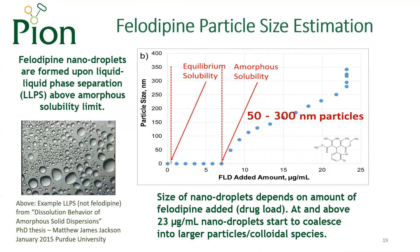This slide shows the evolution of particle sizes with each successive aliquot addition of felodipine stock solution. The drug completely dissolves even above the crystalline solubility, until the amorphous solubility is reached and drug-rich droplets are formed by liquid-liquid phase separation. An example of a typical picture illustrating liquid-liquid phase separation is shown in the photograph, although it is not felodipine in the picture. The size of the felodipine drug-rich nano droplets increases from approximately 50 nanometers to 300 nanometers with each successive aliquot addition. Above a drug loading of about 23 micrograms per milliliter, the nano droplets seem to spontaneously start coalescing into larger particles and colloidal species.